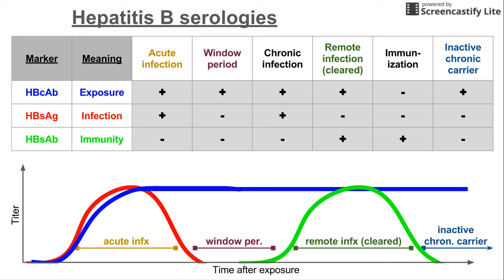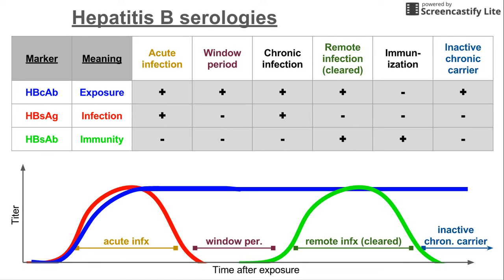Somebody who had the disease many years ago and is now an inactive chronic carrier was at one point exposed, indicated by the line after an acute infection many months after the virus cleared. So the core antibody is positive, the surface antigen is negative as they're no longer infected, and the surface antibody also went away because it's been so long — so the surface antibody is negative as well. This has been a short video explaining the hepatitis B serologies. I hope it was helpful.